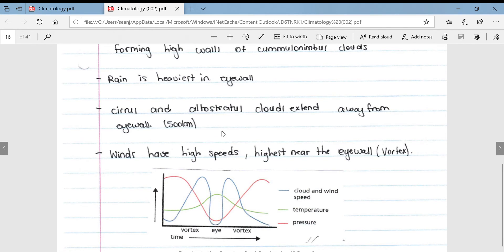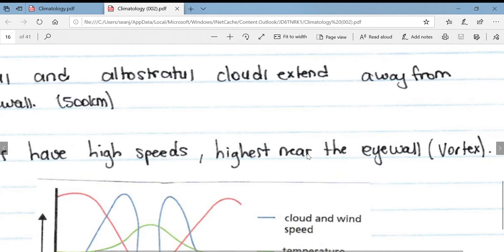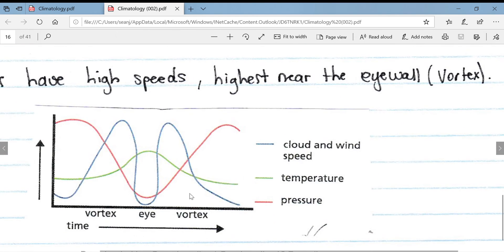The winds have high speeds and they are highest near the eye wall. The vortex, this diagram is another nice diagram just to illustrate the cloud and wind speed, temperature and pressure associated with the vortices as well as the eye.